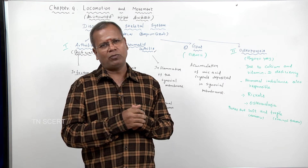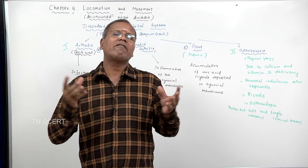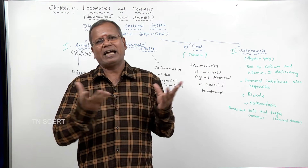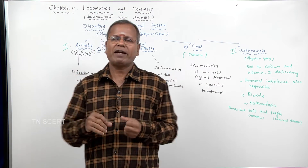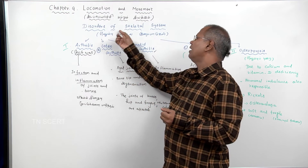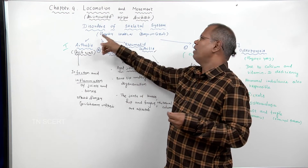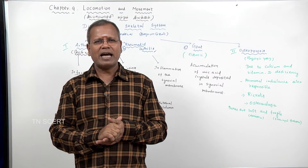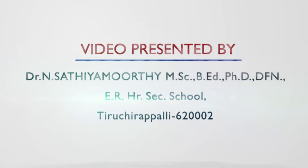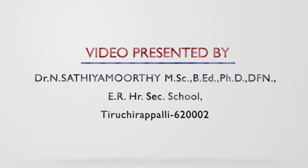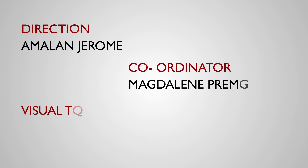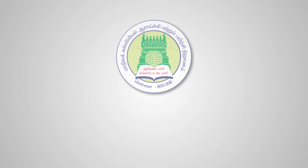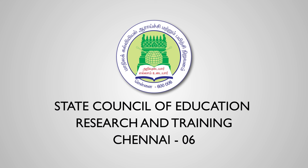To prevent osteoporosis, one should consume a vitamin D enriched diet, such as cod liver oil and shark liver oil. These are all the defects or disorders of our skeletal system. Thank you.